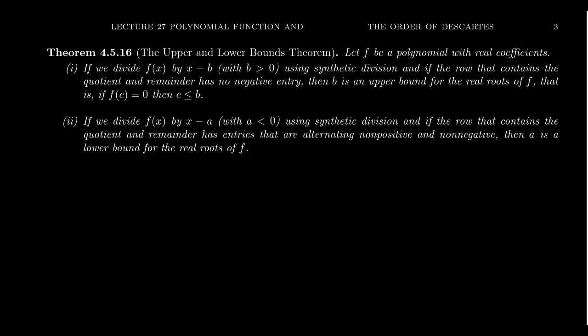The rational roots theorem gives us a potential list of rational roots and we can try them but we don't want to try every single one of them. The upper and lower bounds theorems can help us identify when we're making bad choices with respect to our potential rational roots.